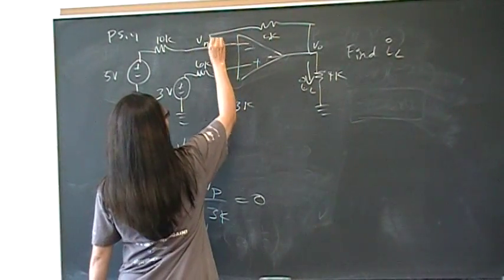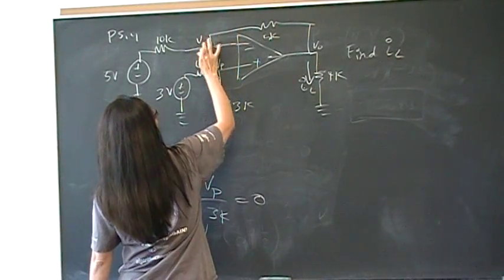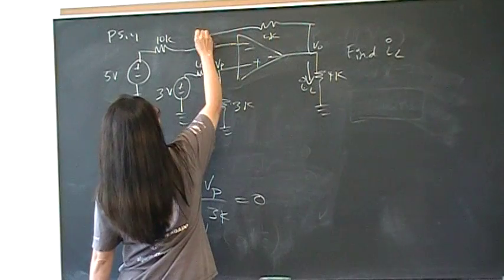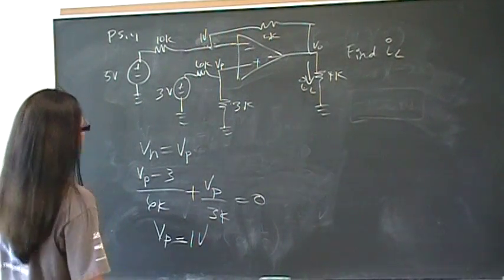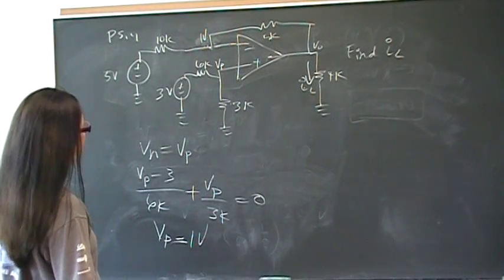So Vp is equal to 1 volt. Therefore we know this node is 1 volt. And since Vn equals Vp, we know that Vn is also 1 volt.